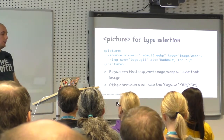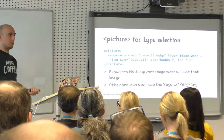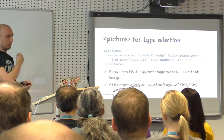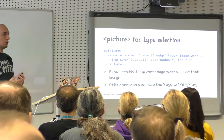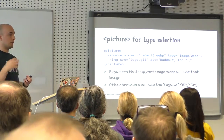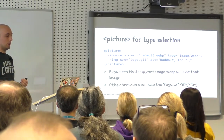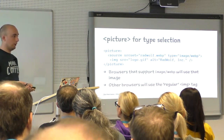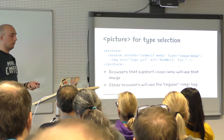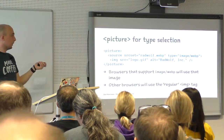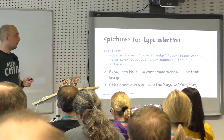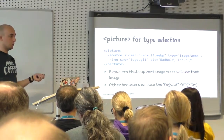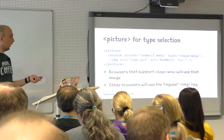A second use case for the picture element is serving file types not supported by every browser. For instance, WebP is an image format comparable to JPEG but with much greater compression — the same quality at a much smaller file size — resulting in faster loading and less bandwidth. The downside is WebP isn't widely supported; mainly Chrome supports it. In the picture element, the srcset lists the WebP image with a type attribute. If the browser supports WebP it uses that; otherwise it falls back to the normal image source.